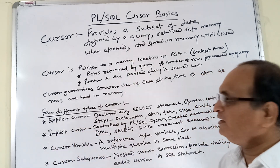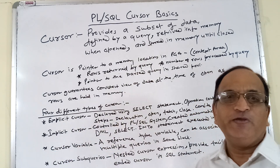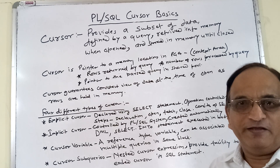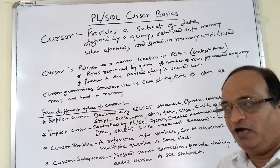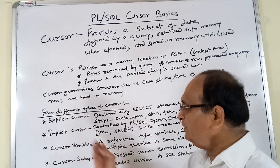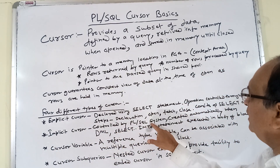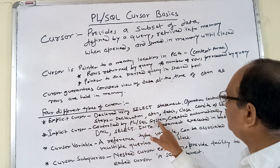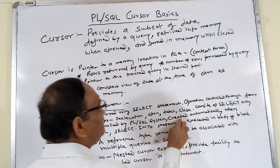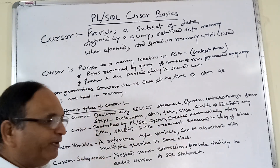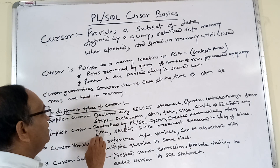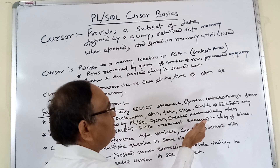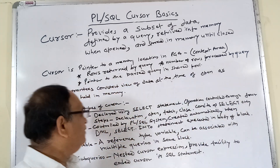The next type is the implicit cursor. The term itself means it is done internally and is hidden from the user — not visible or apparent to the user. It is controlled by the PL/SQL system and is created automatically, without needing to be declared, when DML or SELECT INTO statements are executed in the body of the block.